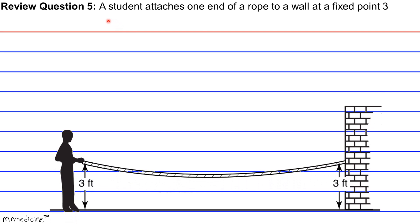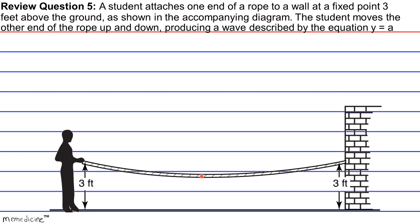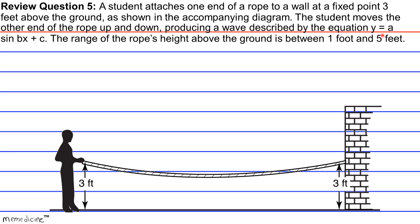Review Question 5. A student attaches one end of a rope to a wall at a fixed point three feet above ground, as shown in the accompanying diagram. The student moves the other end of the rope up and down, producing a wave described by Y equals A sine of BX plus C. The range of the rope's height above ground is between one foot and five feet. The period of the wave is 4 pi. Write an equation that represents the wave.